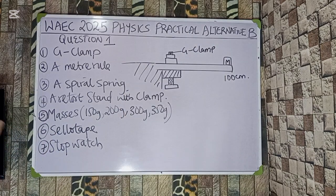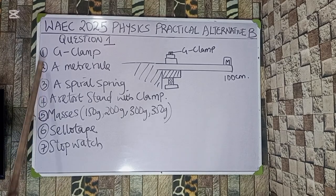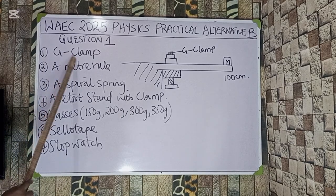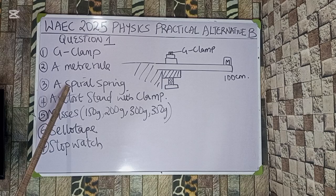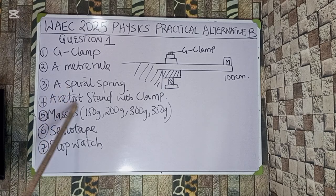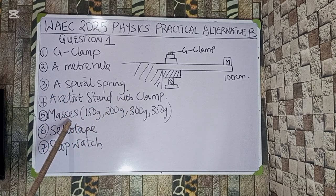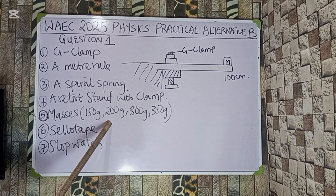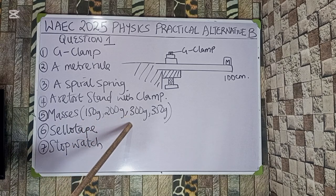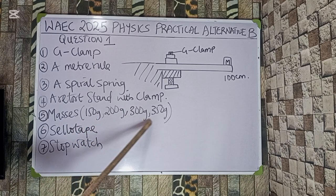From question one, we are asked to provide the following apparatus: number one is G-clamp, number two is meter rule, followed by spider spring, number four is retort stand with clamp, and number five there are masses. We have a range of masses — 150g, 200g, 300g, and 350g.